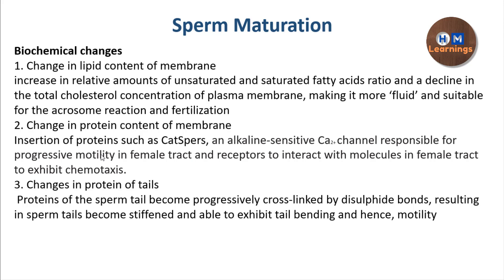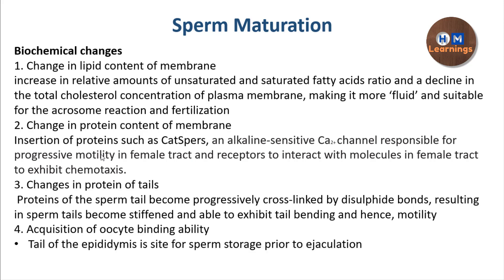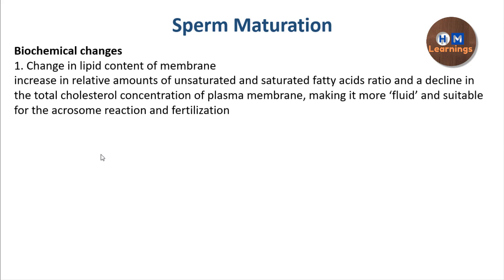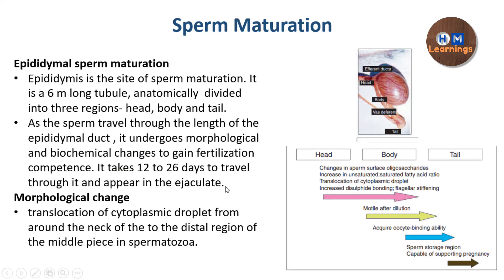Another acquisition is the oocyte binding capacity — the ability to bind to the oocyte and to the zona pellucida. These capacities are also acquired during sperm maturation. The tail of the epididymis is the site where sperm are stored before ejaculation. In this diagram you can see all these changes: increased disulfide bonding, translocation of the cytoplasmic droplet, increase in the unsaturated-to-saturated fatty acid ratio, acquisition of oocyte binding capacity, and the tail as the sperm storage region.